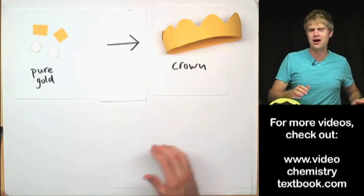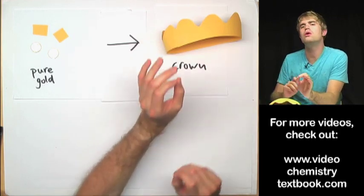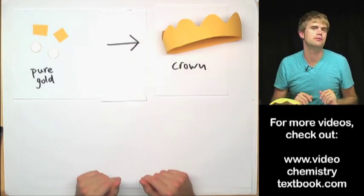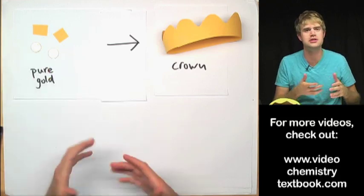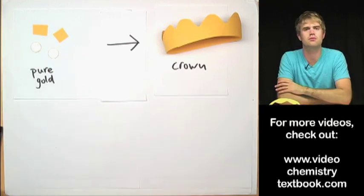So in that case, the crown would kind of look gold, but it wouldn't be made of pure gold because it would have this cheaper metal, the silver or something else mixed in with it.